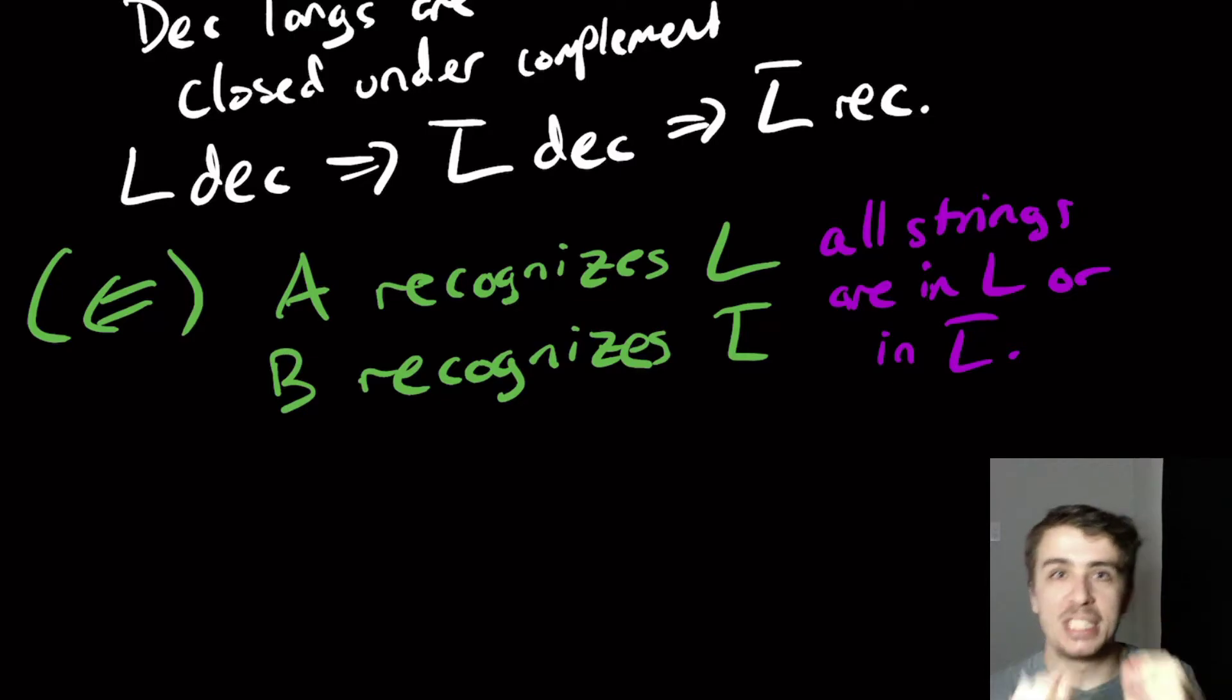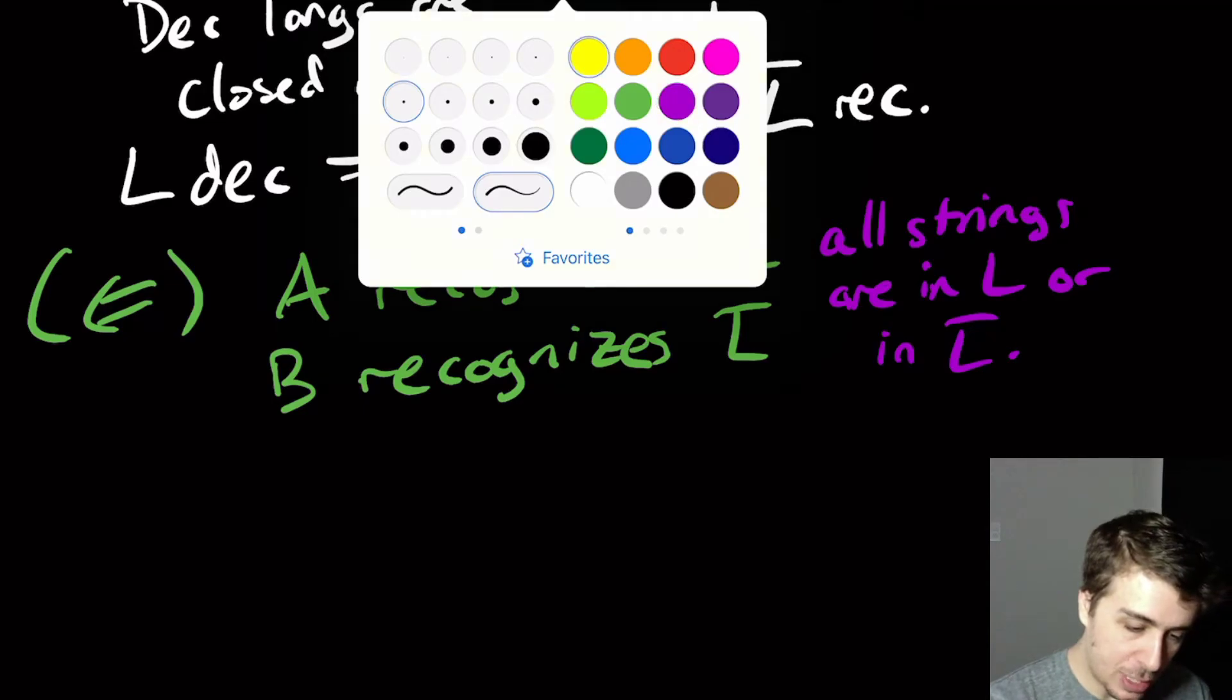So the key idea here is to simulate them in parallel, so to speak. Do one step of each of the machines at a time until one of the two says accept, because one of the two will say accept at some point.